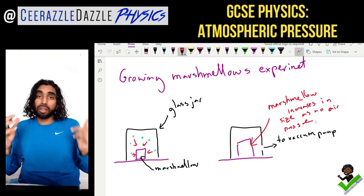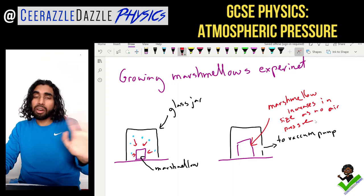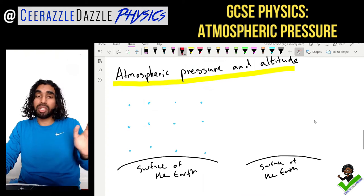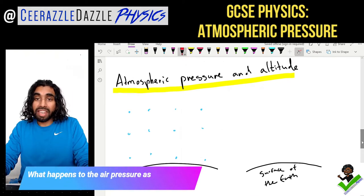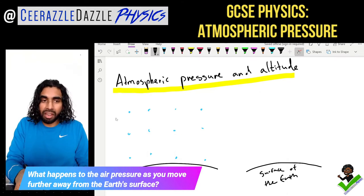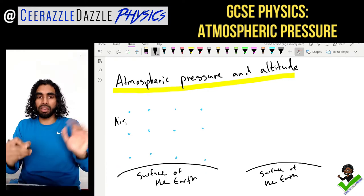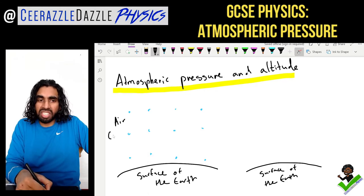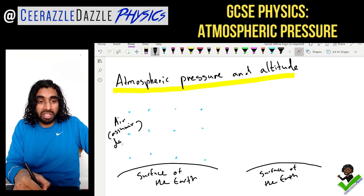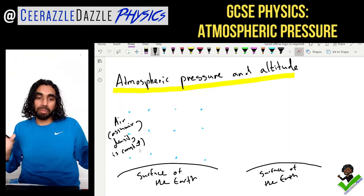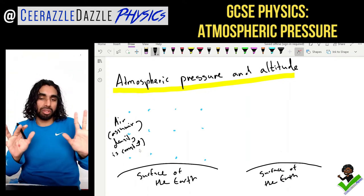The last thing we're going to look at is how atmospheric pressure changes the further you are away from the earth. Here is the earth's surface with air particles drawn around it. We are initially assuming constant density — the air particles are evenly spaced.